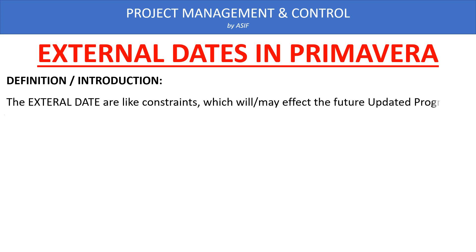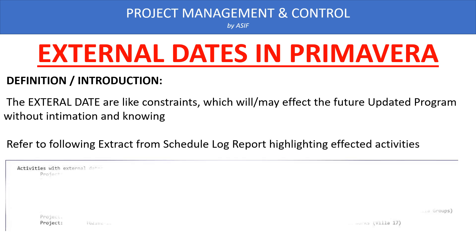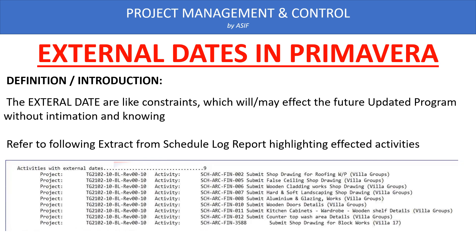The external dates will affect our future updates without our knowledge, because they are generated without our awareness. First we want to see how the program is affected due to external dates. In the schedule log, it will show you the activities and the number of activities affected due to external dates. In this program, the schedule log shows that 9 activities are affected because of these external dates.